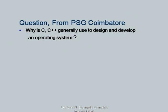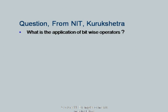Next: why is C and C++ generally used to design and develop operating systems? It is a matter of choice of those who write operating systems. Incidentally, not all operating systems are written in C or C++. Earlier operating systems were actually written in assembly language, and there was a predecessor of C called BPCL, a language developed specifically to write operating systems. It just so happens that most people choose C to write their operating system. There is a question about the application of bitwise operators from NIT Kurukshetra — I will think of a meaningful application and show it in one of the sessions.